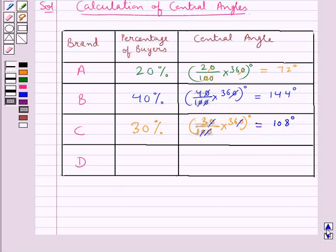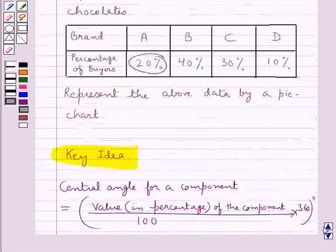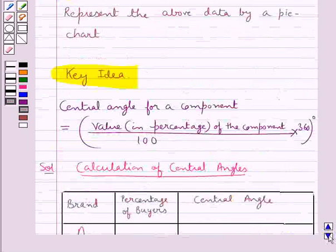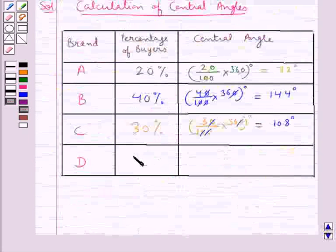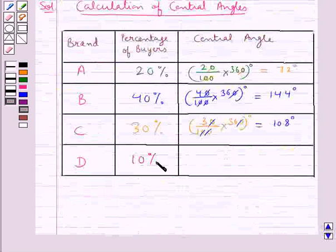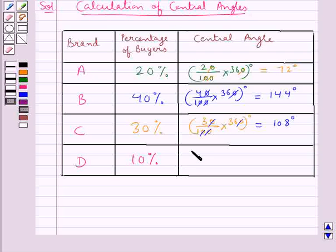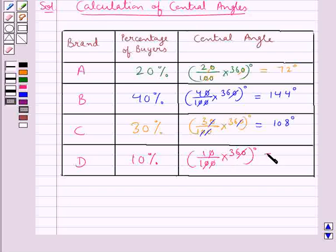For brand D, the percentage of buyers is 10%. The central angle is given by 10 upon 100 into 360 degrees. Cancelling the zeros, 1 into 36 equals 36 degrees.